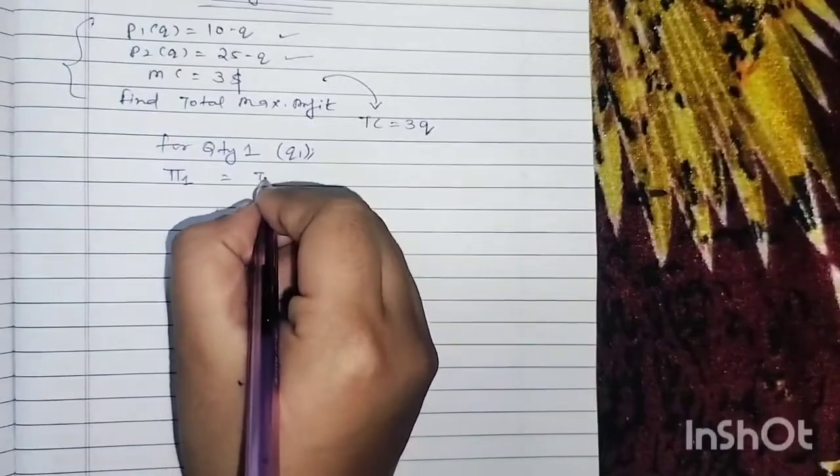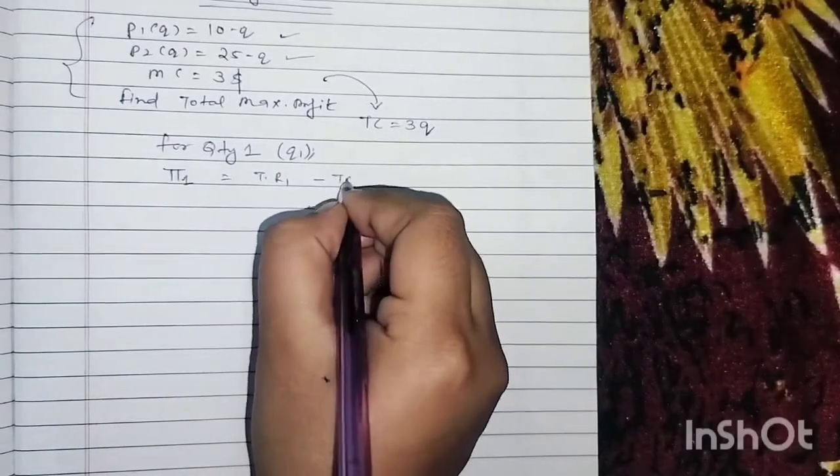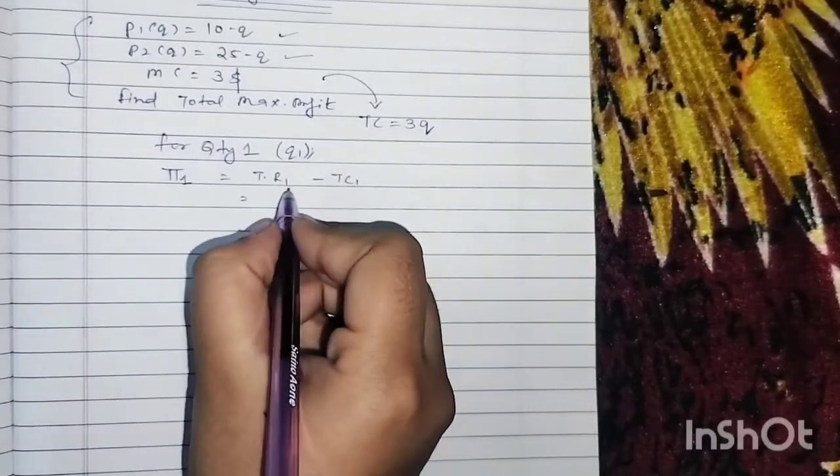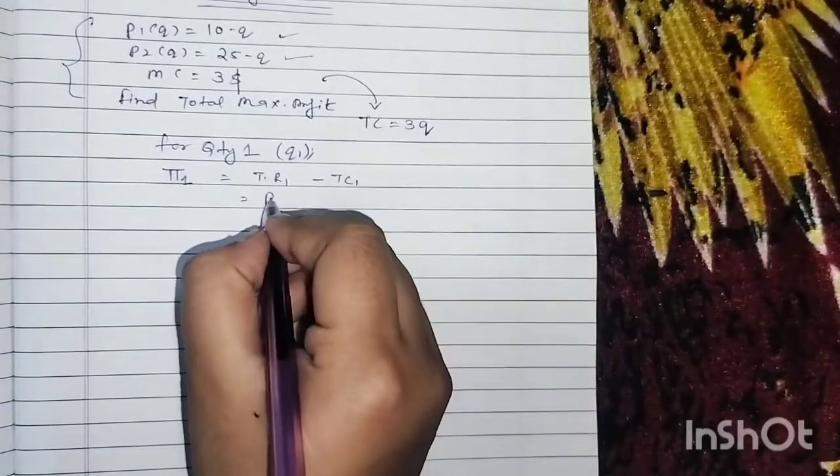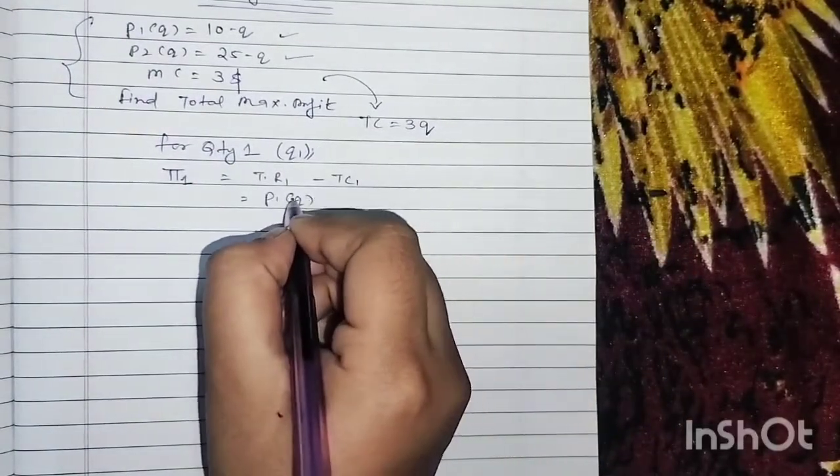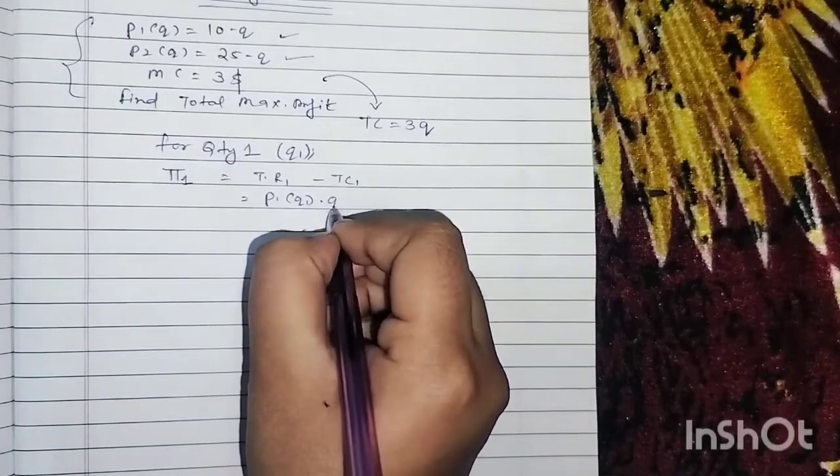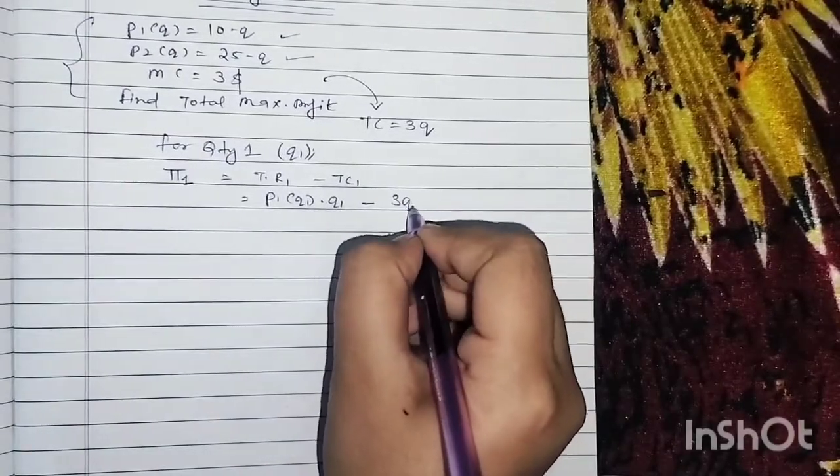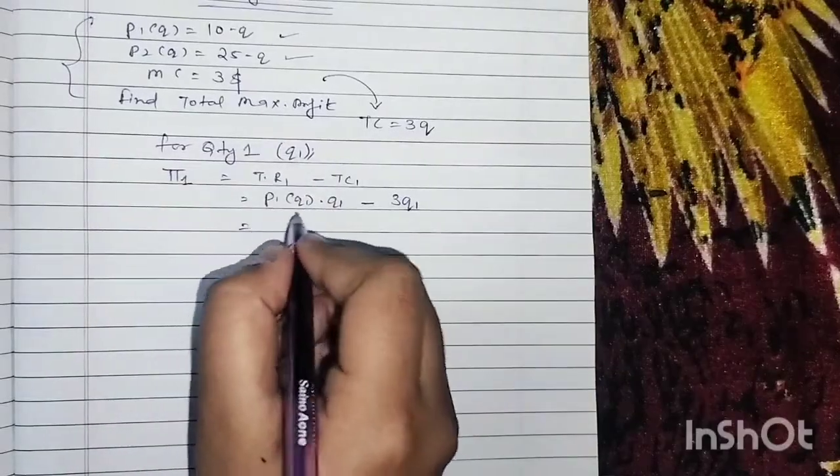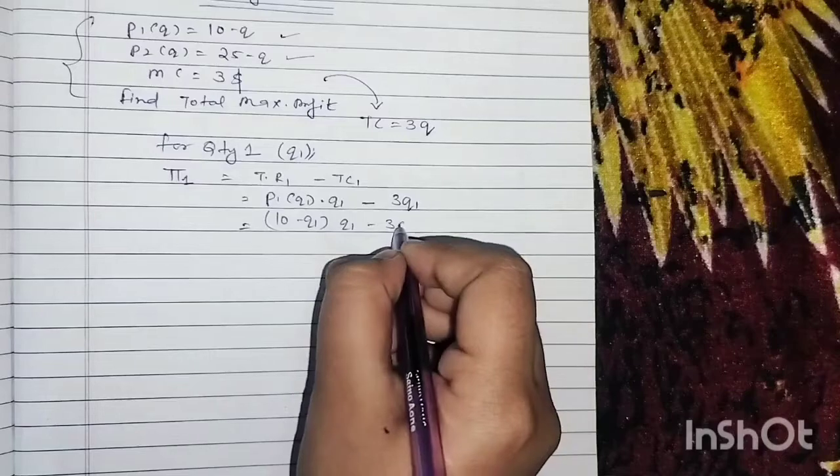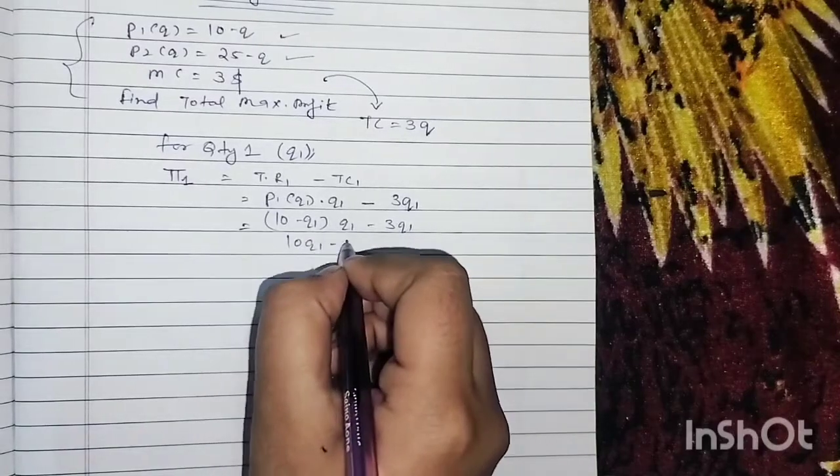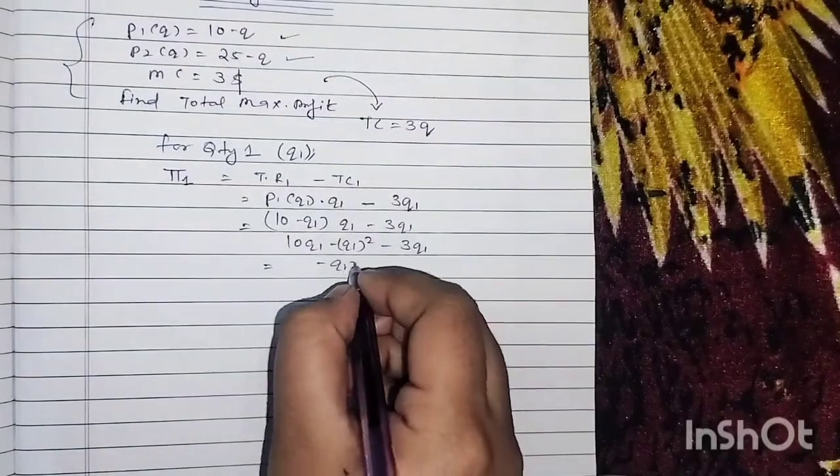TR1, that means TR is the function of Q1, so it will be P1(Q1) times Q1 minus TC(Q1), meaning 3Q1. So it will be (10 - Q1) times Q1 minus 3Q1, which equals 10Q1 minus Q1² minus 3Q1, giving -Q1² + 7Q1. This is your profit.